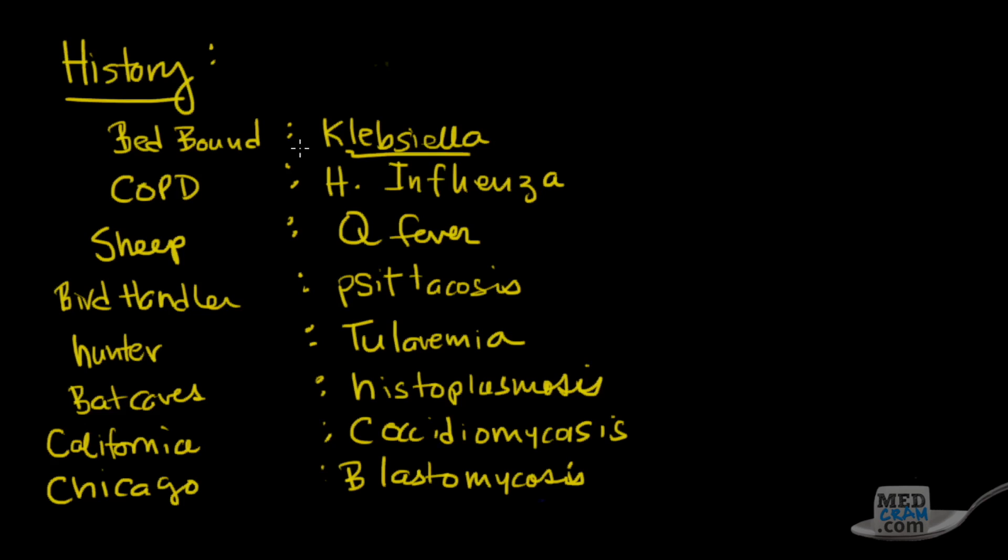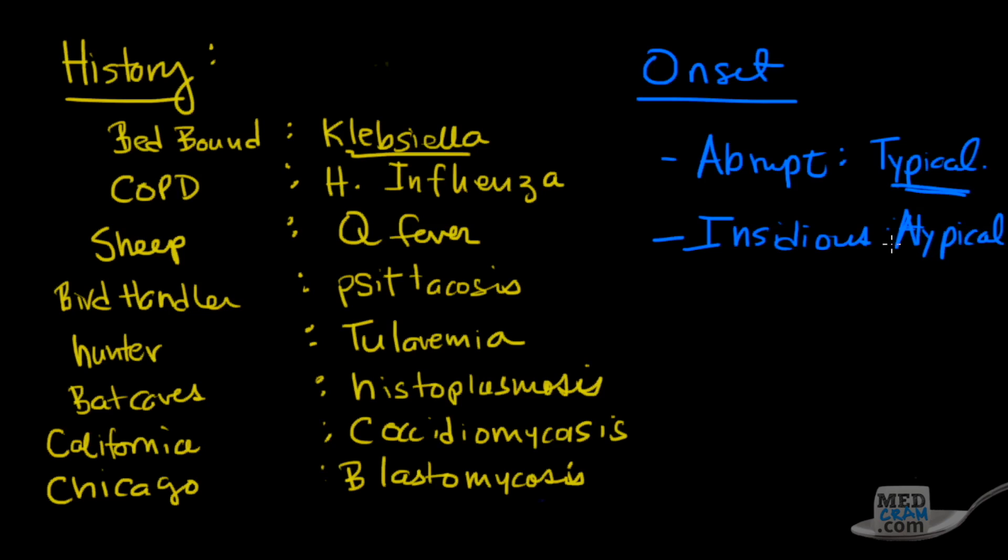Something else that you might see on history is the onset. If it's abrupt, think about typical pneumonia. That's typically what happens. If it's insidious, if it's not as severe, it comes on gradually, that type of onset is associated with different bacterial organisms, atypical organisms, versus typical organisms.